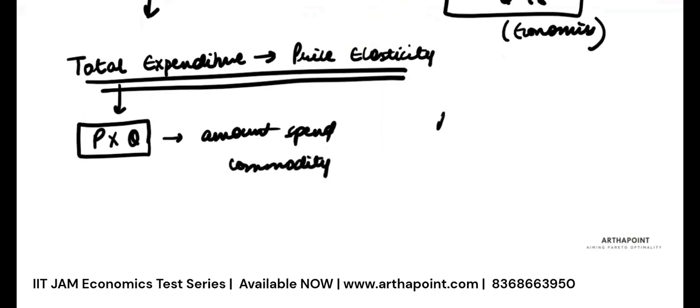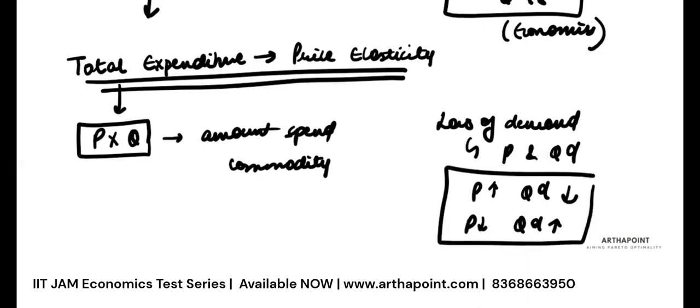Now, we know that the law of demand says there is an inverse relationship between price and quantity demanded. As price increases, quantity demanded decreases. As price decreases, quantity demanded increases.